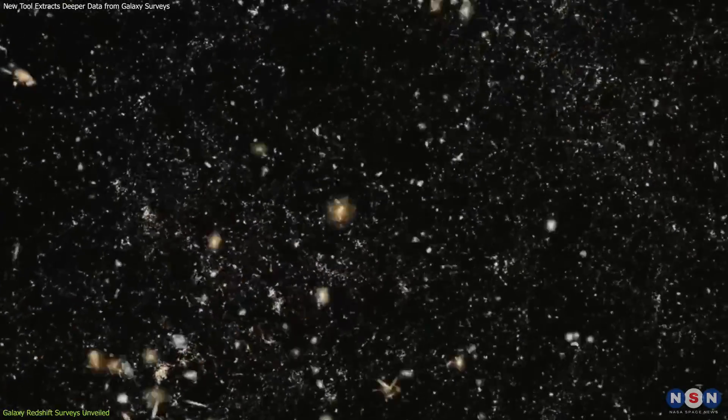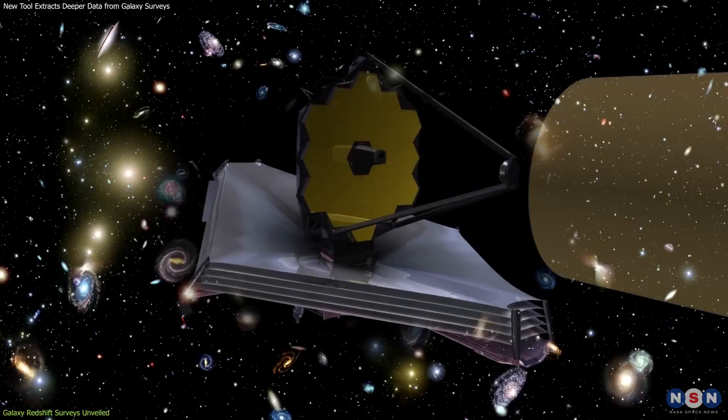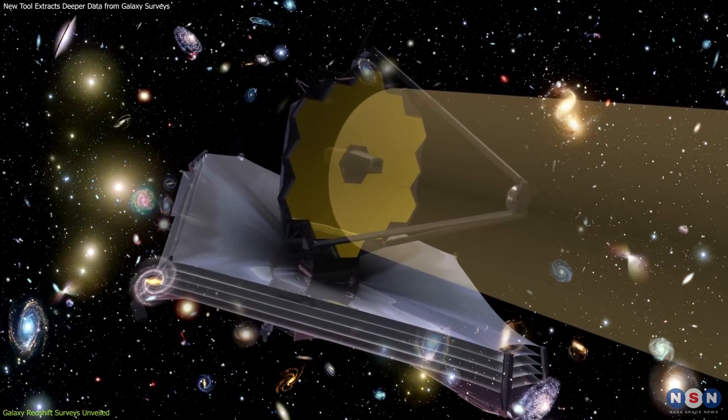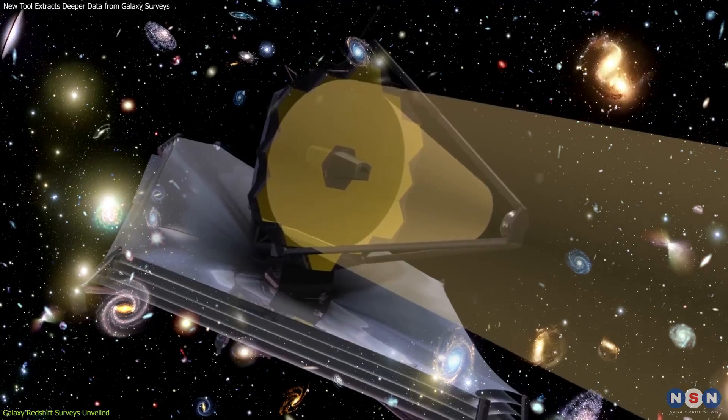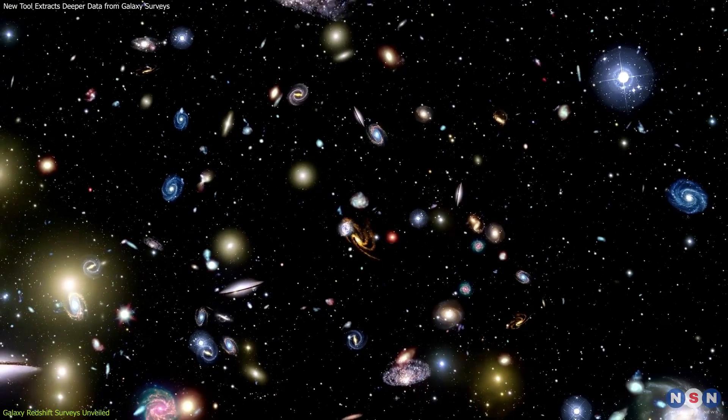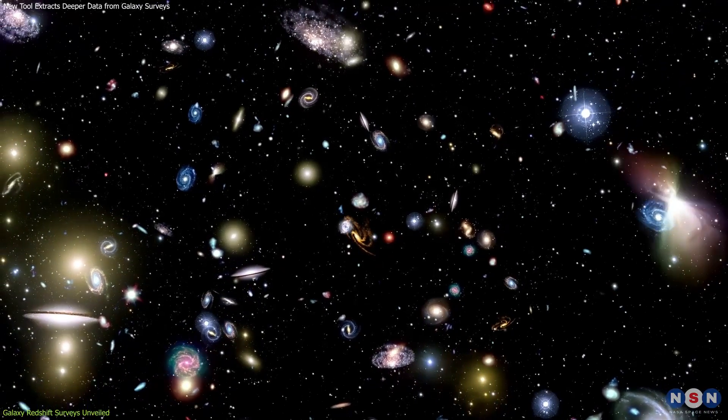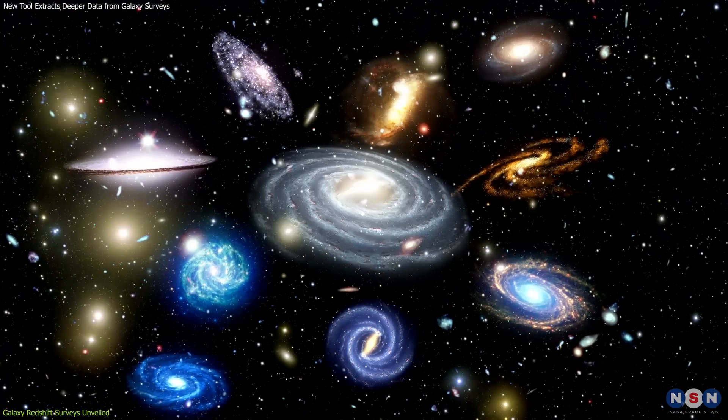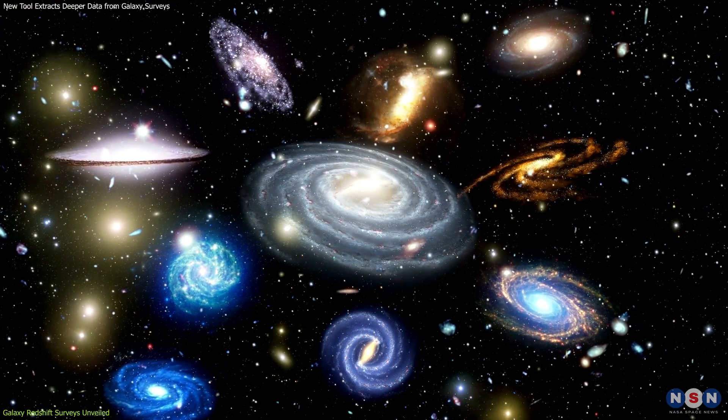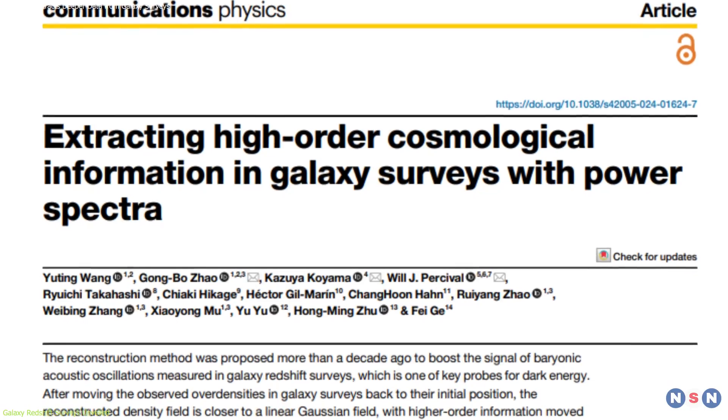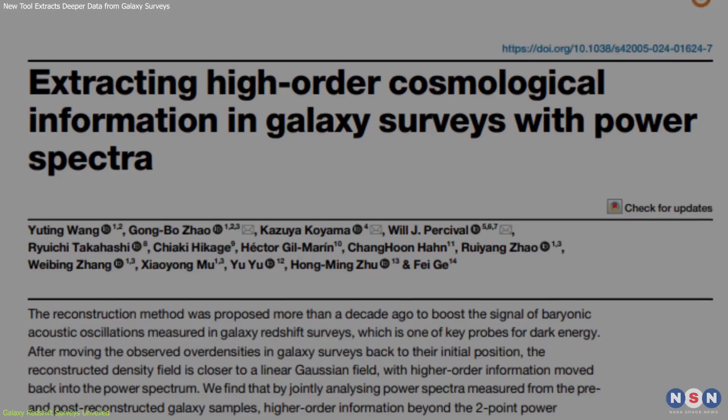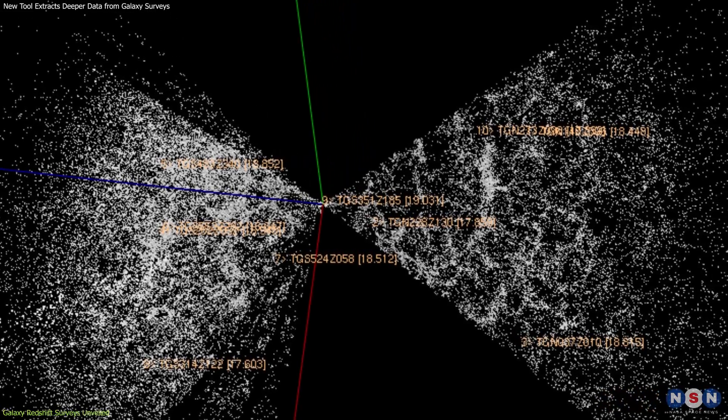In terms of methodology, galaxy redshift surveys employ state-of-the-art telescopes equipped with spectrographs that capture the light from distant galaxies. Analyzing this light allows scientists to determine not only the distance of these galaxies, but also information about their composition and motion.